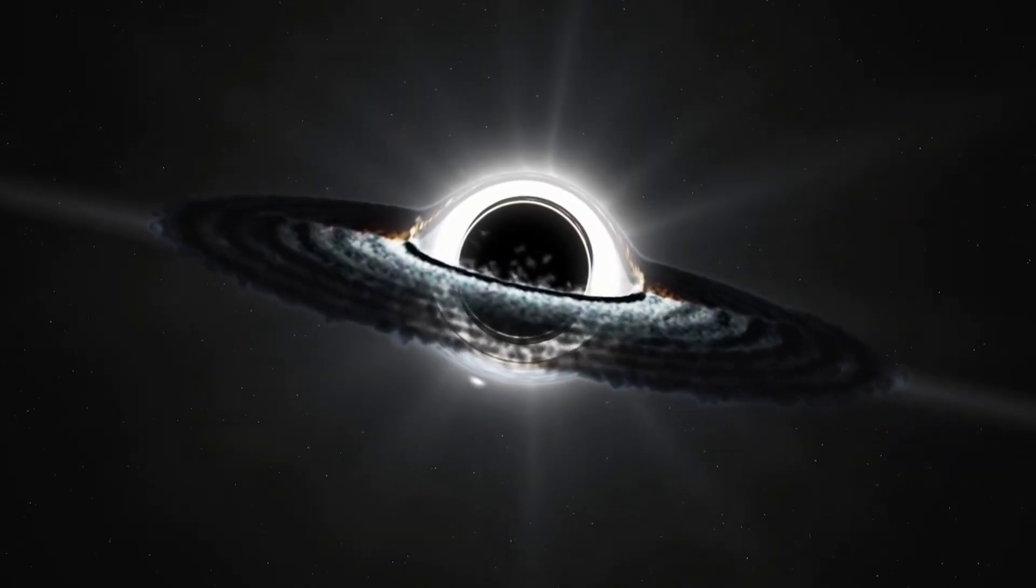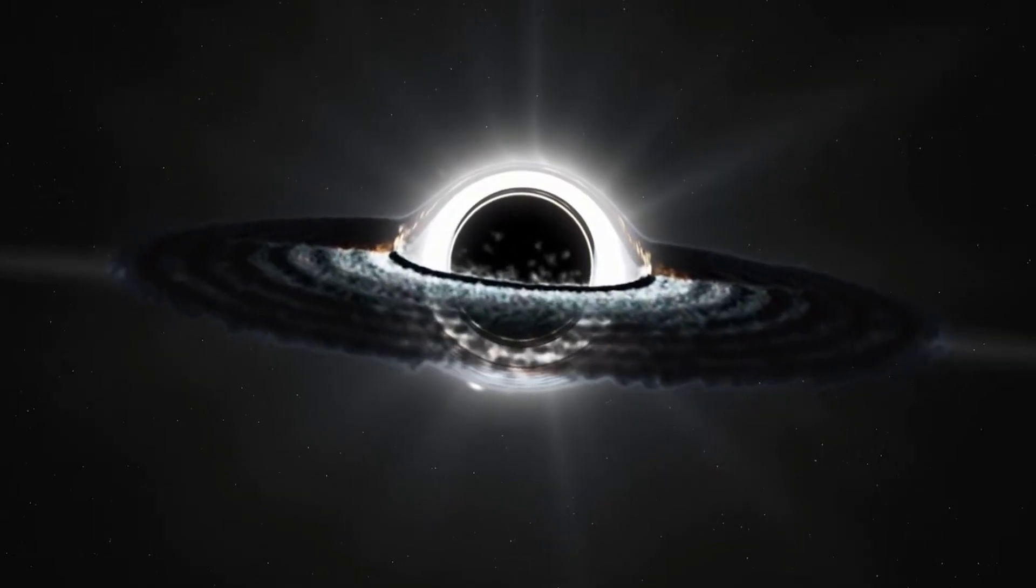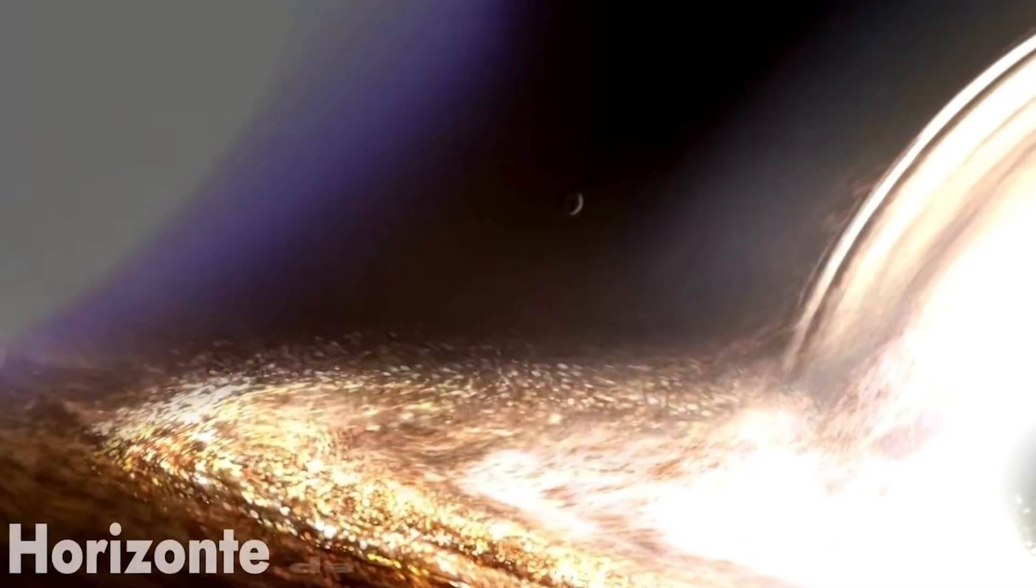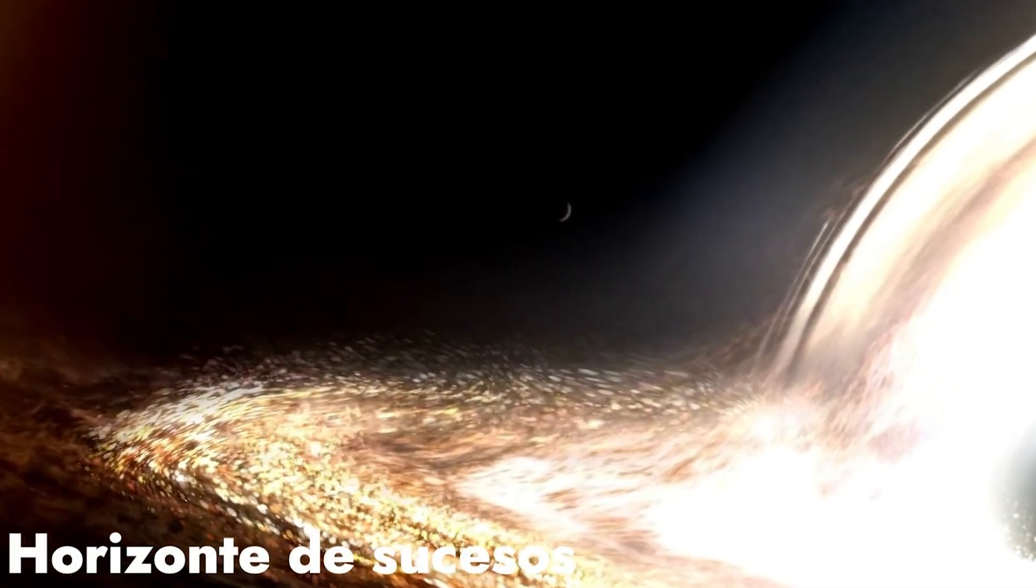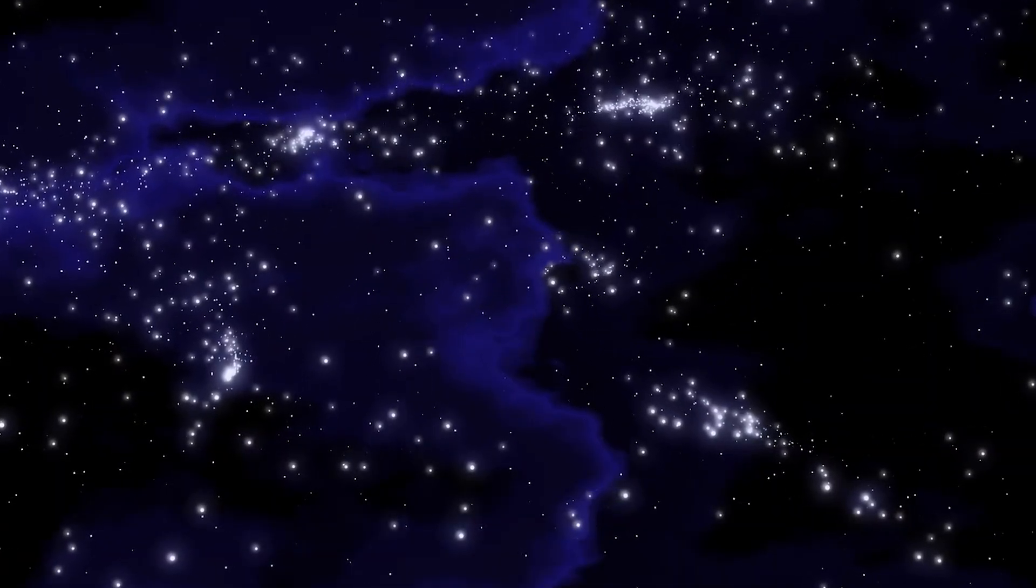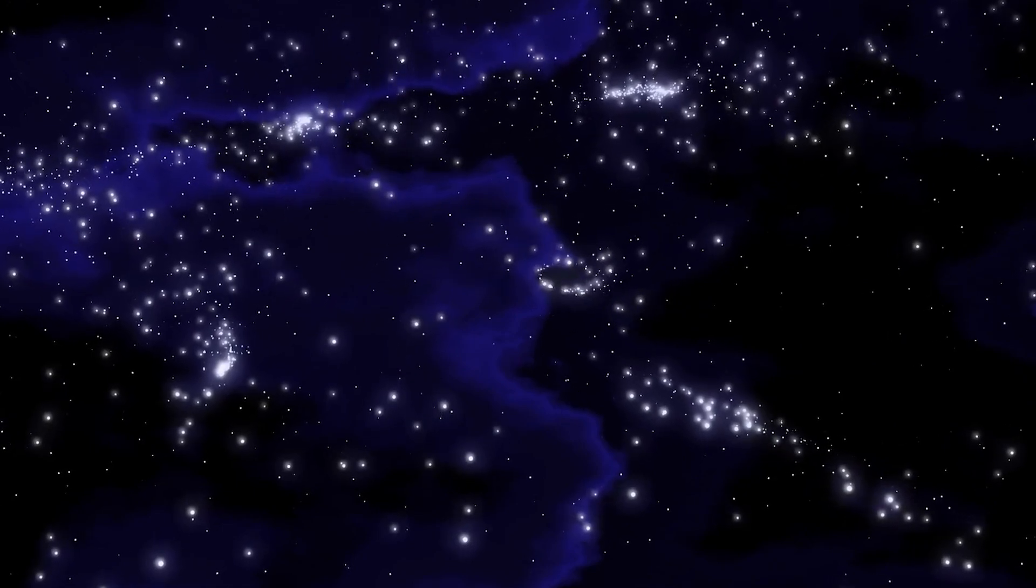This is where things get truly extraordinary. The gravitational pull around a black hole is so incredibly strong that it creates what is known as an event horizon. The event horizon is not a physical barrier, but rather a region in which space gradually curves.